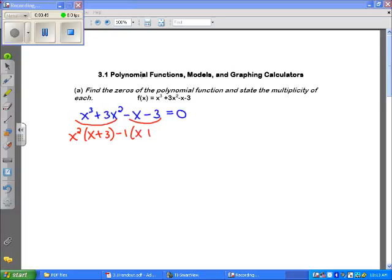and I also get x plus 3. Okay, so my two factors would be x plus 3, and then my other factor would be x squared minus 1.